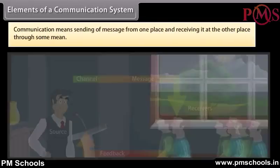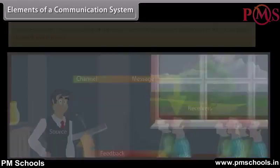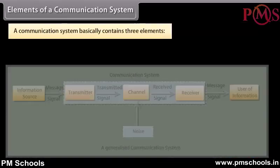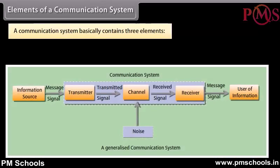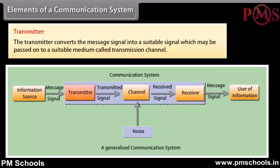Elements of a communication system: Communication means sending of a message from one place and receiving it at the other place through some medium. A communication system basically contains three elements: transmitter, transmission channel, and receiver.